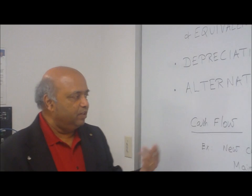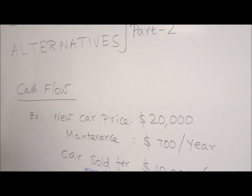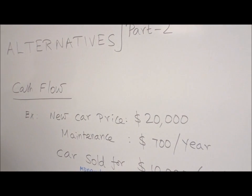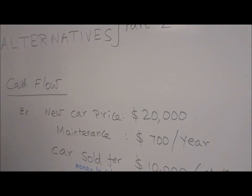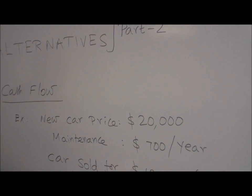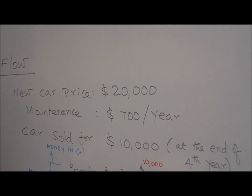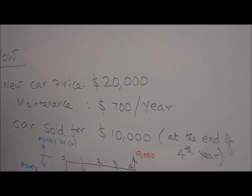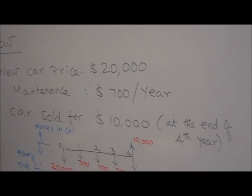So as an example, suppose you have a new car you purchased for $20,000. That means you are spending $20,000. Cash Flow is out. Then your maintenance costs $700 per year. So you spend $700 per year. Money goes out. Then you sell the car for $10,000, end of the fourth year. That is you get $10,000 into your hand. So if you represent that in a diagram,